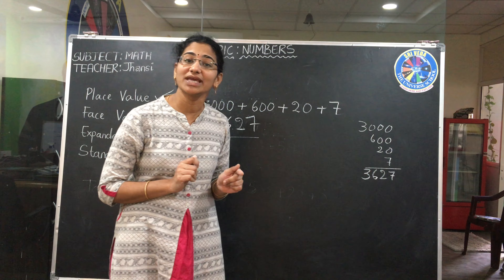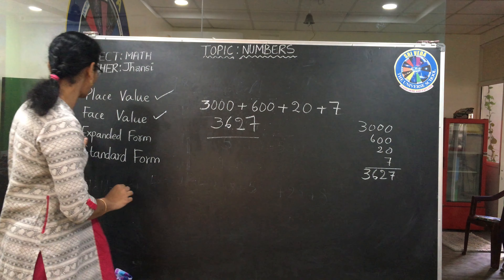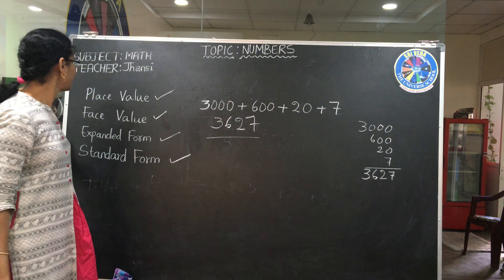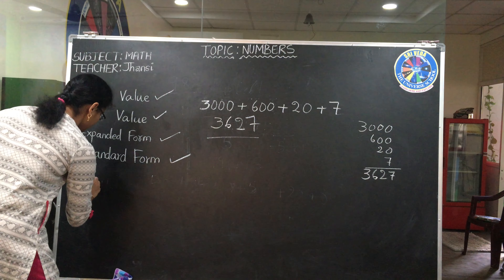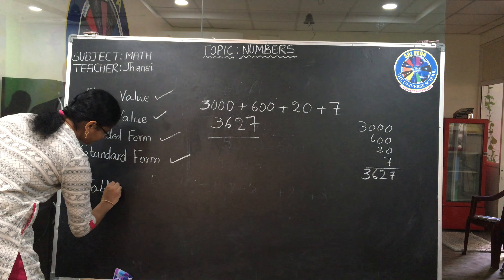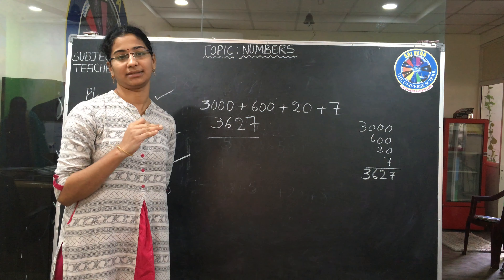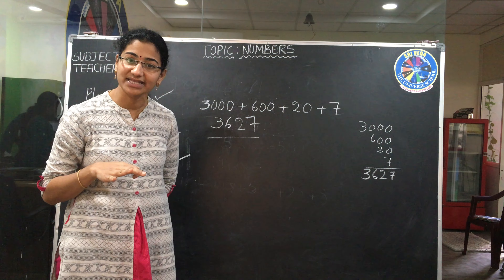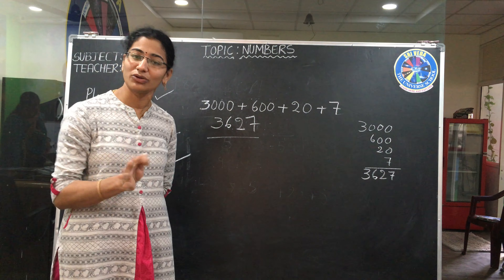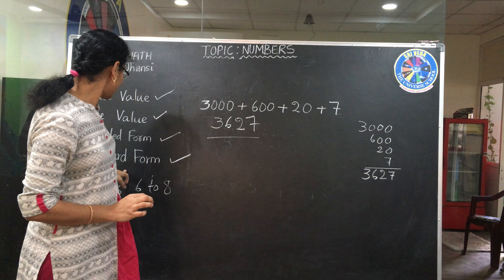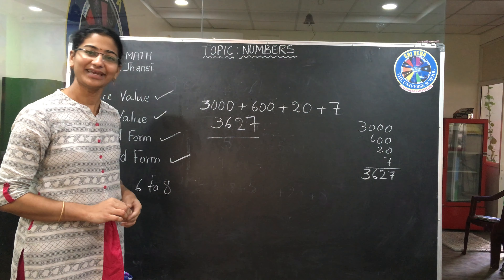Now you have a clear idea of expanded form and standard form. Today we learned place values, face value, expanded form, and standard form. Along with this, yesterday you learned tables one to five. Today, you also have to learn tables from six to eight randomly — not from six-one, six-two in order, but randomly: six-fives are, six-twos are, six-nines are — you should be able to tell the answer randomly. Then I will send you a worksheet related to expanded form and place value. Just do that worksheet. Have a nice day. Thank you.